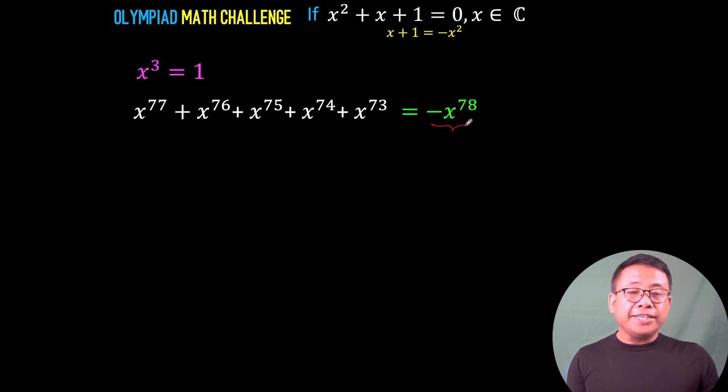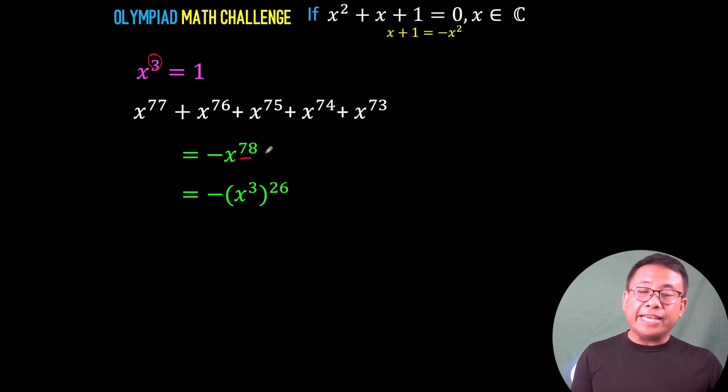Now, going back to this expression, -x^78, which is the value of the expression that we would like to find. Notice that this 78 can be written as multiples of this exponent 3, equal to 3 × 26. And applying the power of power rule of exponents, we can write -x^78 as -(x³)^26. But what is the value of x³? x³ = 1. So, we can substitute 1 for x³ to arrive at this. But 1^26 is still 1. So therefore, the value of this is simply -1. And that is the value of the expression we would like to find out.